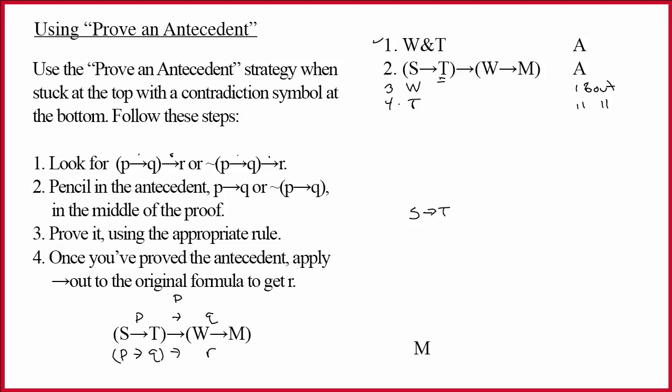And then, I'm going to go get my box, which I have below, and put it up above this. Now, all I have to do is put S at the top of this box, T at the bottom. This is a provisional assumption for arrow in.